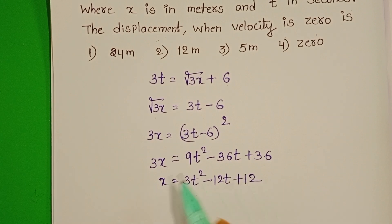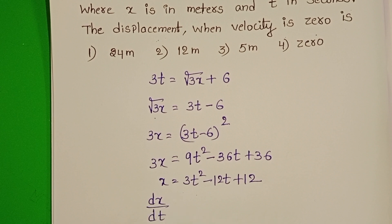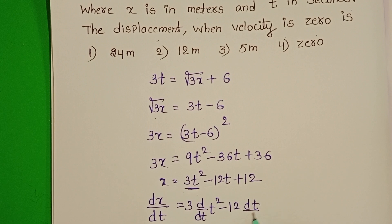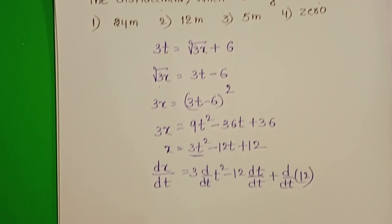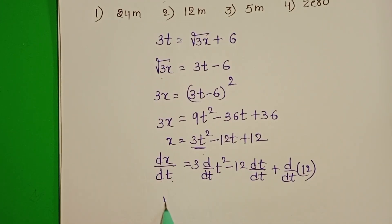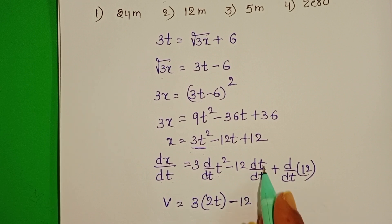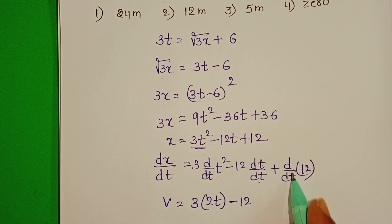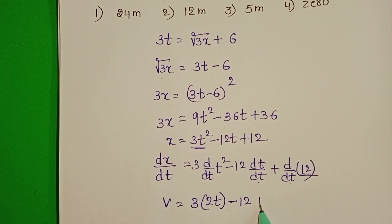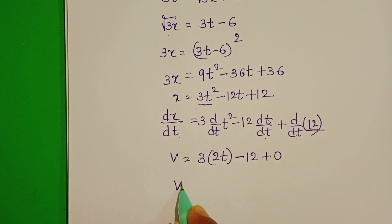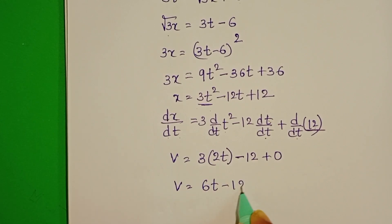The rate of change of displacement is called velocity. So differentiate with respect to time: 3 times d/dt of t squared minus 12 times dt/dt plus d/dt of 12. dx/dt equals velocity: 3 times 2t minus 12 times 1. The differentiation of a constant is 0. Therefore, velocity equals 6t minus 12.